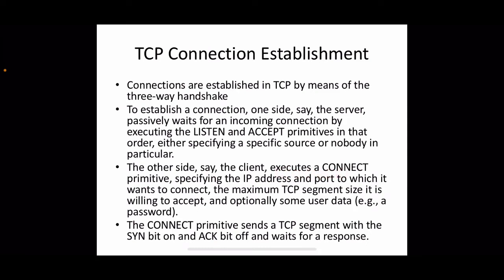The client requests a connection from a server by executing the connect primitive, specifying the IP address and port number — which server and which service from that server. Along with the IP address and port number, other information such as the maximum TCP segment size it is willing to accept, and optionally passwords, may be included. The connect primitive sends a TCP segment with the SYN bit on and ACK bit off, and waits for a response.